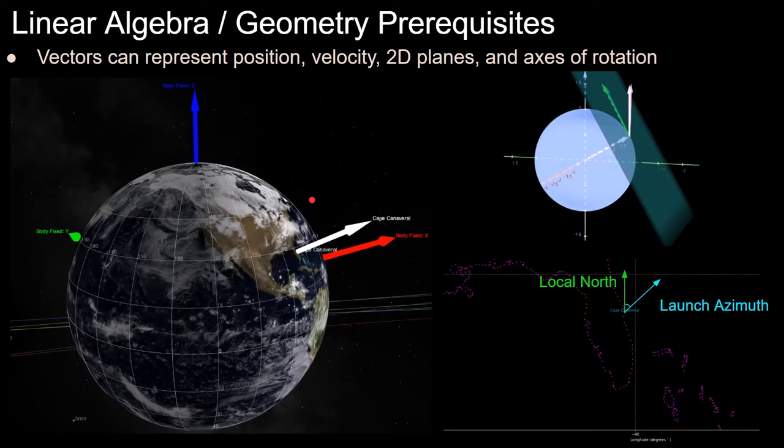For linear algebra and geometry the first thing we must understand is that 3D vectors can represent a number of things. Specifically for rocket trajectory simulations they will be representing position, velocity, acceleration, two-dimensional planes, and axes of rotation. For example the rocket position vector as shown in the white here pointing from the center of the earth to Cape Canaveral, Florida also represents the local 2D surface plane, planes can be represented by vectors pointing perpendicular to them as shown in the diagram on the top right, and also represents the 3D axis of rotation used to calculate the launch azimuth vector from local north.